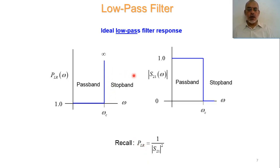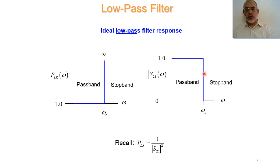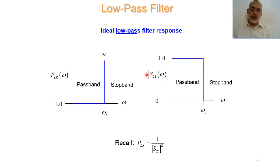So it is required to design a circuit that satisfies such a filter response. In a practical circuit, we cannot obtain such an ideal response. In the passband, the PLR will be approximately unity and then will gradually go to zero. It may not be completely zero in the stopband, and there may be some variation in the passband. All of this will be discussed in the next video.